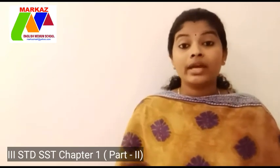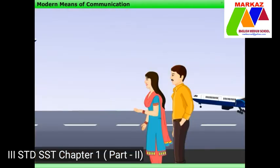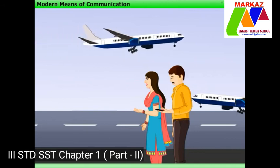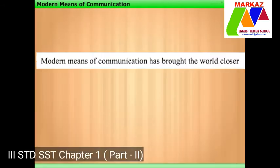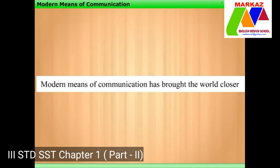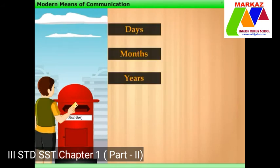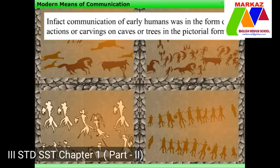Now let's watch a short animation video on modern means of communication. Sachin and Mina have reached the Andaman and Nicobar Islands. Sachin calls his father to inform him that they have reached their destination. Modern means of communication has brought the world closer. Earlier it would take days, months, or maybe years to send a message to people staying far away.